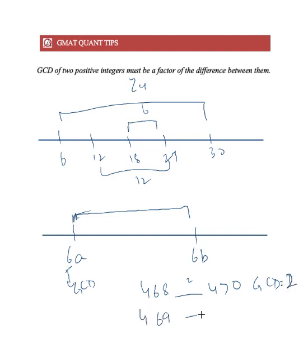Say we have these two numbers. Now the distance between them is 2 but since they are odd, the GCD here must be 1. So basically the GCD has to be a factor of whatever is the distance between them.